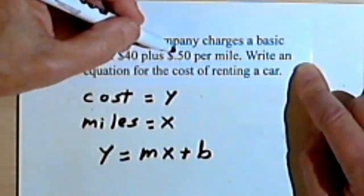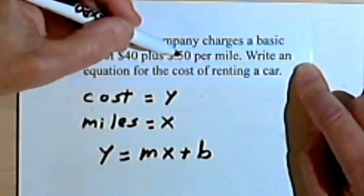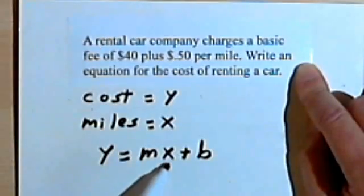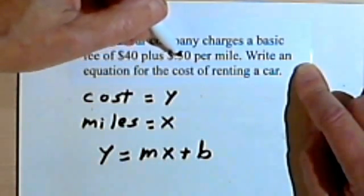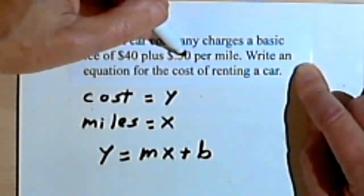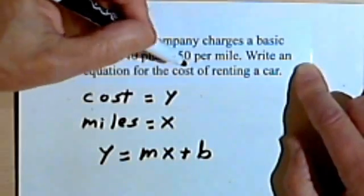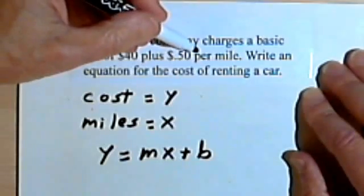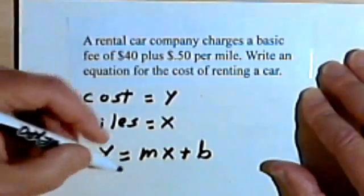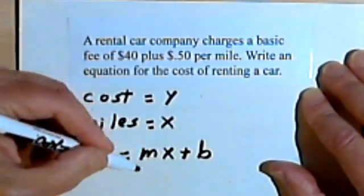We've got this 50 cents per mile. Remember, the x is miles. As the miles increase, we keep adding more and more money. It keeps costing more and more. In fact, it costs a half a dollar more each time we drive an additional mile. So it seems like the slope should be one-half.